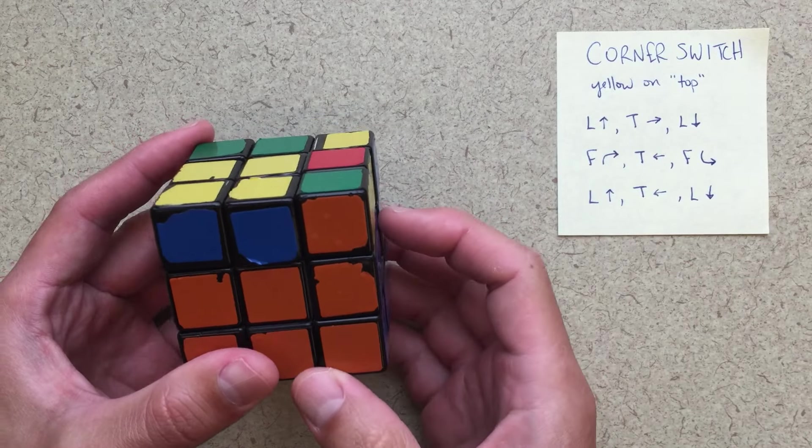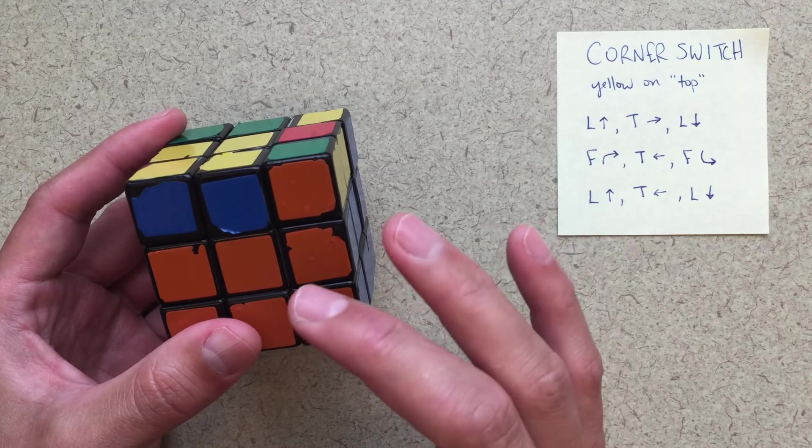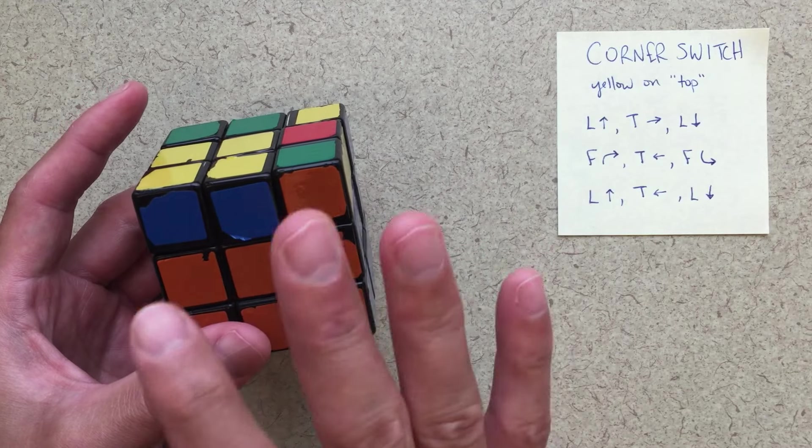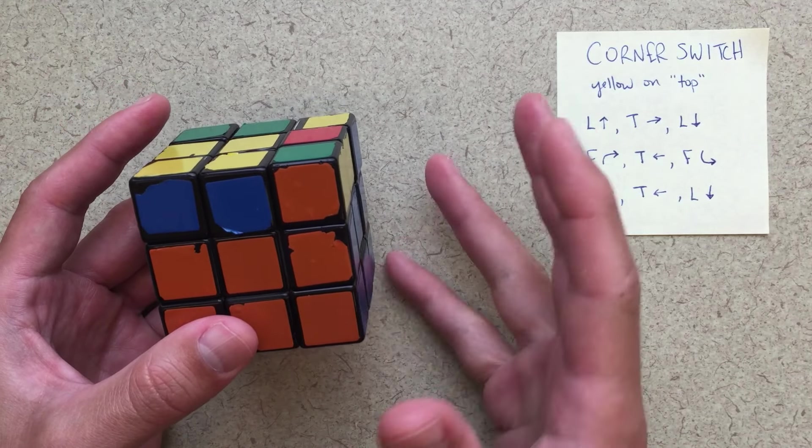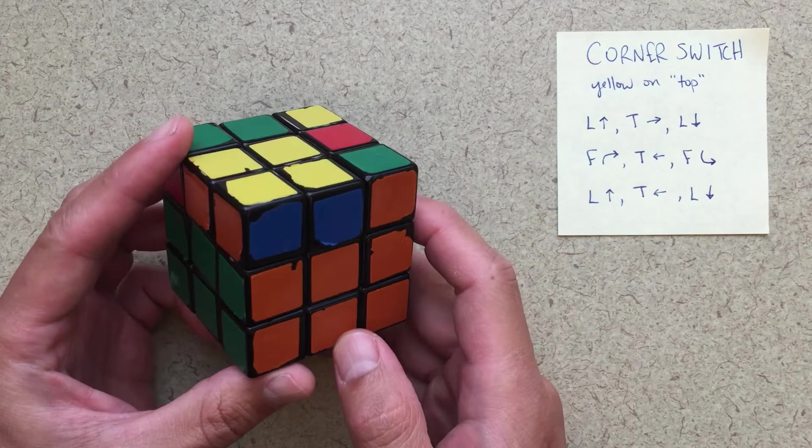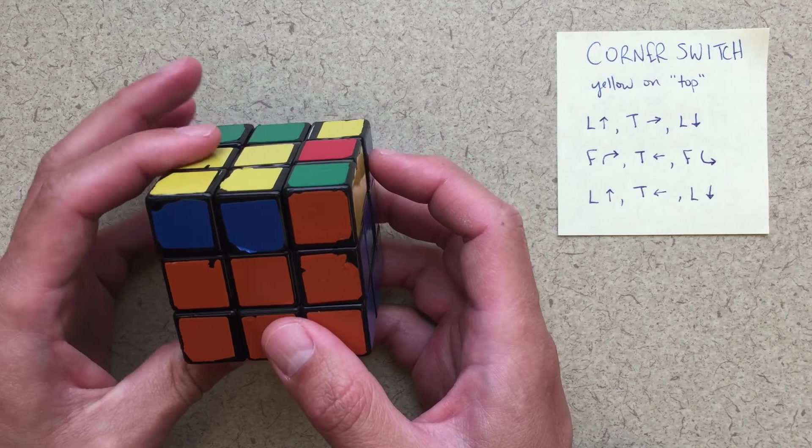If you're doing more than that, then you're missing a little bit. You need to think about lining things up and just doing two corner switchers at most to get all the corners set. So one more time, let's just go through this algorithm. I go a little bit slower this time. Yellow's on top. I'm switching these two here.